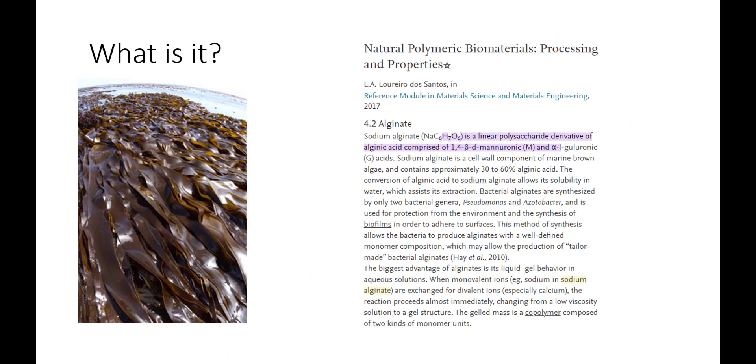As its name sort of suggests, it is derived from a type of brown seaweed or algae. You can also find it produced by a handful of bacterial alginates, but most of them are extracted from types of marine brown algae.